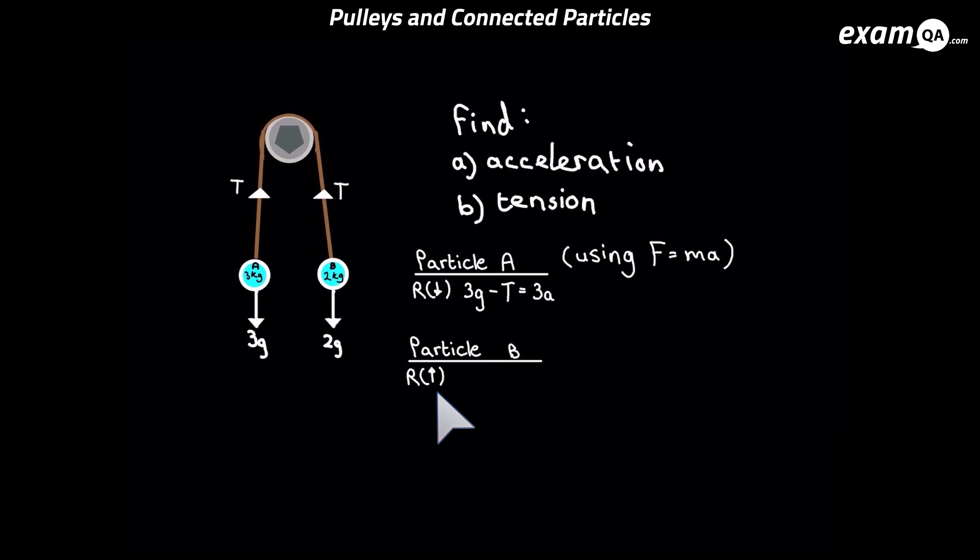So what forces has B got in the upwards direction? It's only got T, the tension. And in the opposite direction, it's got 2G, so we're going to put that as negative. And of course, that's going to be equal to MA, and the mass of our particle is 2. Now we've got two equations. We can go on to do simultaneous equations to help work out tension and acceleration.